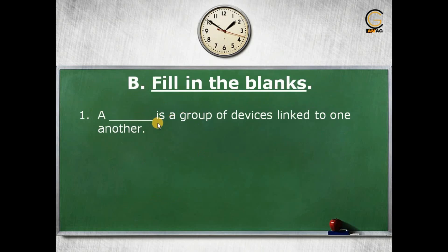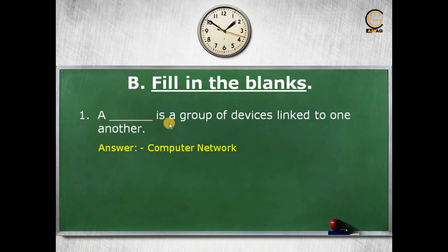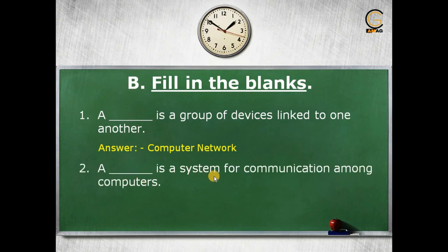Now moving to fill in the blanks. The first question: a dash is a group of devices linked to one another. The correct answer is computer network, as a computer network is a group of devices linked to one another. Second question: a dash is a system for communication among computers. The correct answer is network, as the network is a system for communication among computers.